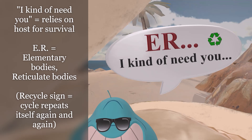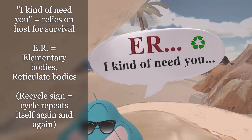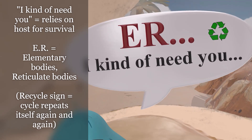The elementary body is the small, spore-looking type and it's the infective form of the bacteria. The elementary body enters the host cell and gets enclosed in a vacuole called an inclusion, where it becomes the reticulate body. The reticulate body uses host cell resources to divide by binary fission. Eventually, the reticulate bodies start transitioning back to elementary bodies, causing the cell to burst open and release elementary bodies into surrounding fluids, which attach to other cells to repeat the cycle — represented by the recycle sign over here.